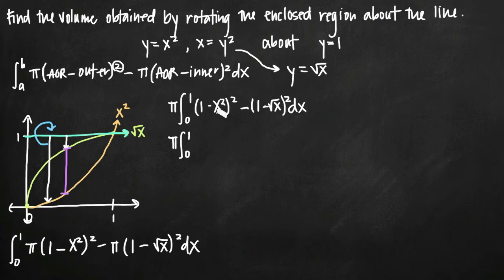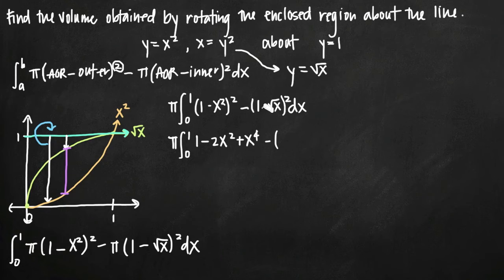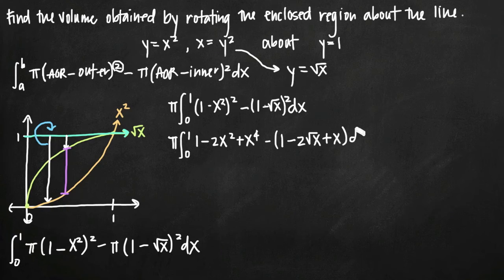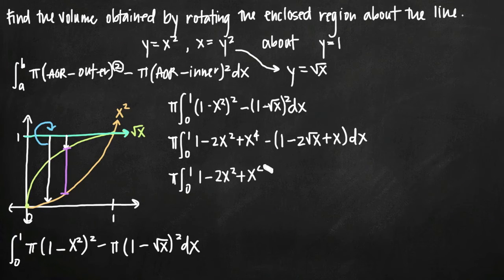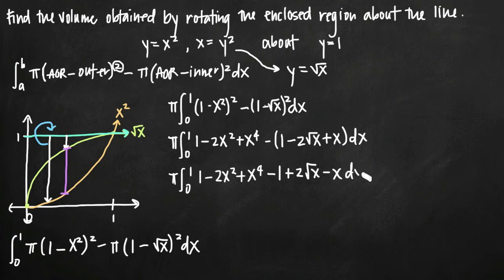Multiplying out: (1 minus x squared)² gives 1 minus 2x squared plus x to the fourth. And (1 minus square root of x)² gives 1 minus 2 square root of x plus x. Distributing the negative sign on the second binomial gives minus 1 plus 2 square root of x minus x, dx.